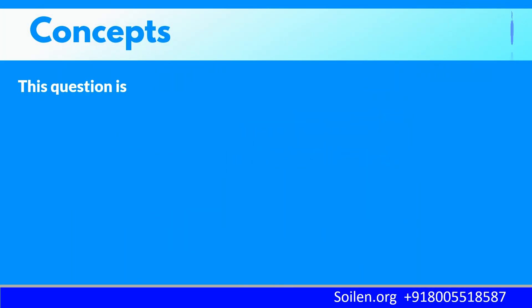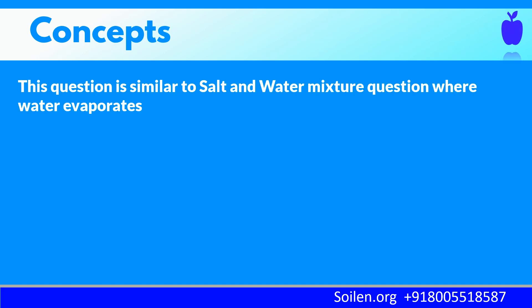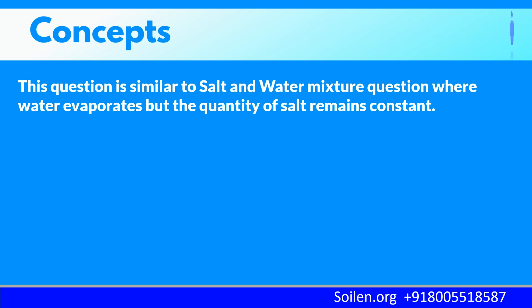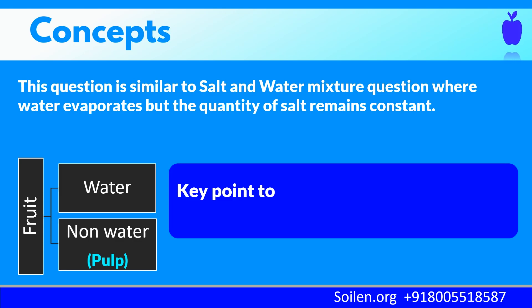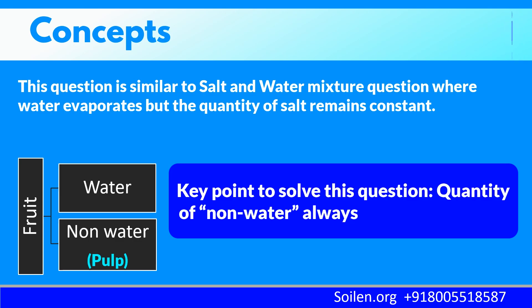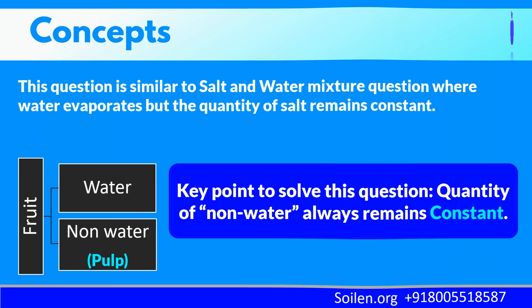This question is similar to a salt and water mixture question where water evaporates but the quantity of salt remains constant. Some part of the fruit is water and the remaining is non-water. The key point to solve this question: the quantity of non-water always remains constant. In our solution, we will use the term pulp for the remaining non-watery solid part of the fruit.